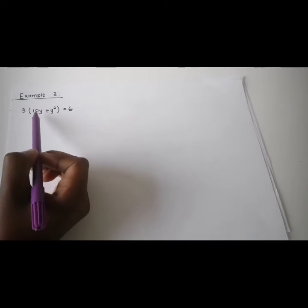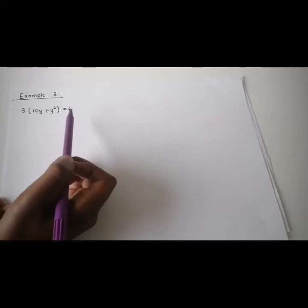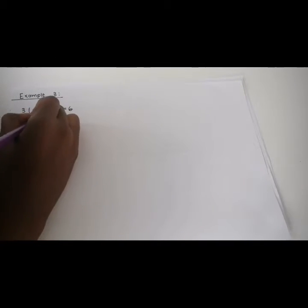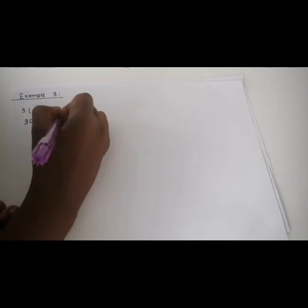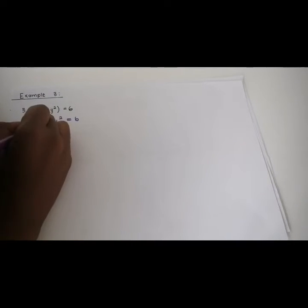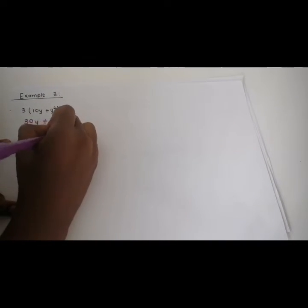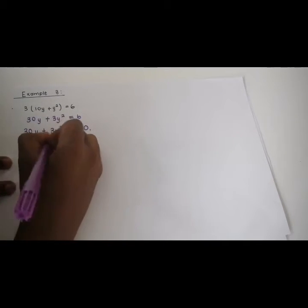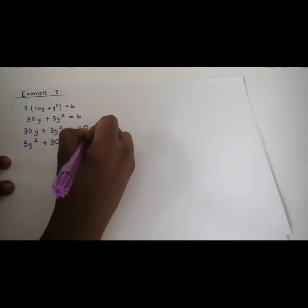Example 3. This is 3 times 10y plus y squared equals 6. So we multiply the 3 in: 30y plus 3y squared equals 6. We bring the 6 over so it's in the form we want: 3y squared plus 30y minus 6 equals 0. But is the coefficient of y squared 1? No — so we have to divide again.